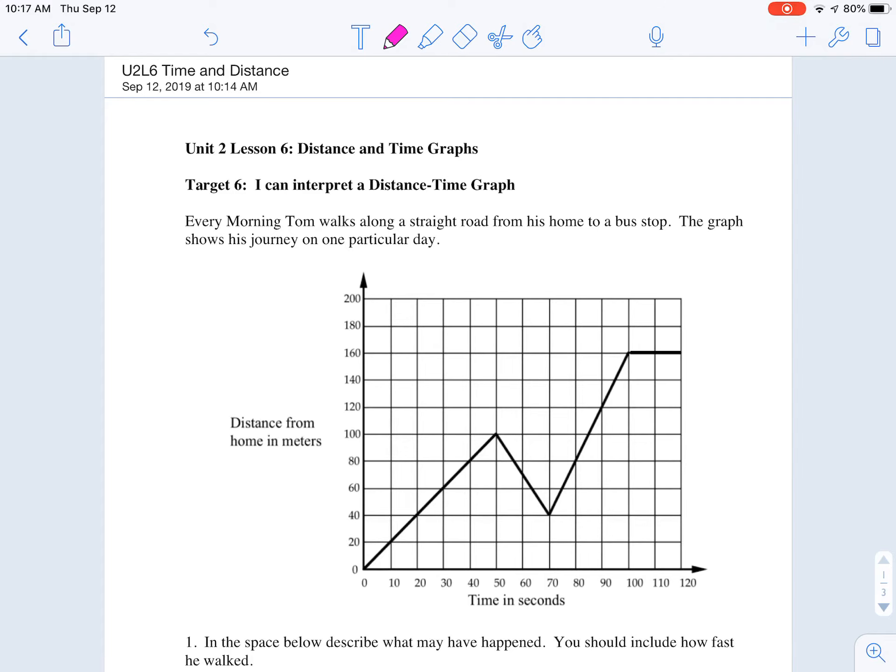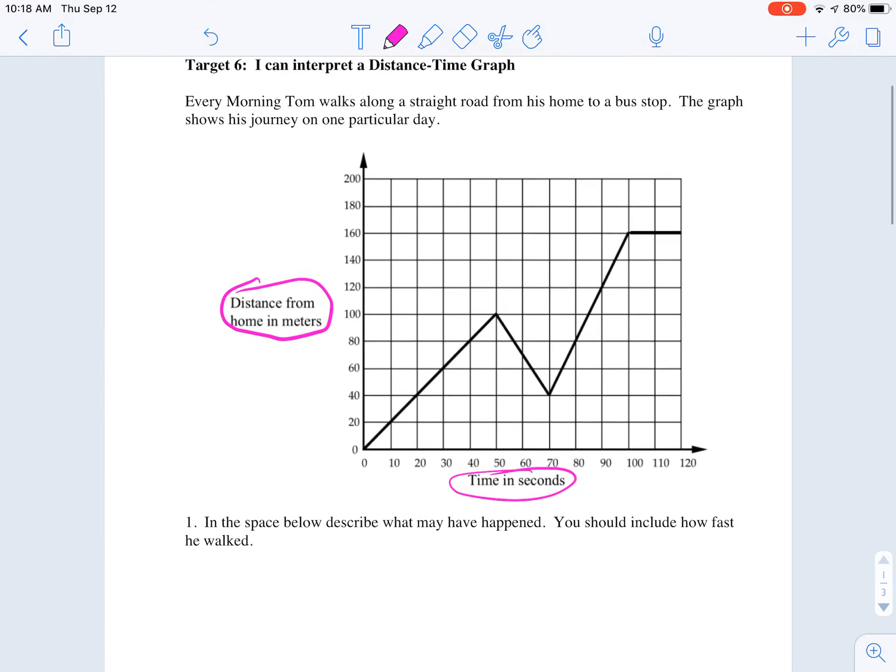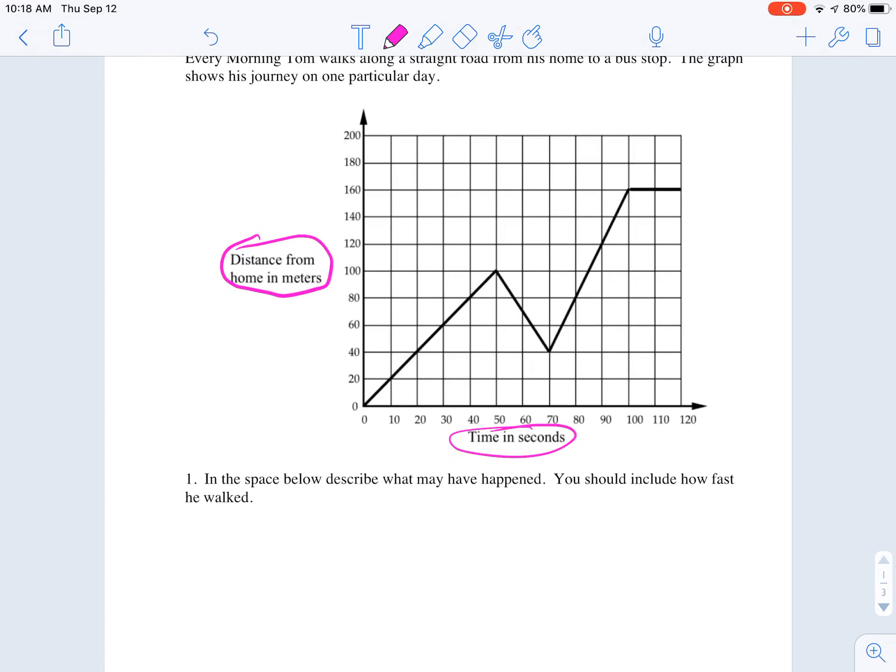So for this first graph, we're told that every morning Tom walks along a straight road from his home to a bus stop. The graph shows his journey on one particular day. So the first thing we're seeing is that the y-axis is his distance from home, and the x-axis is the time of his trip. What we're noticing is that we see a lot of increasing, decreasing, constant intervals, much like what we were used to seeing in Lesson 5.